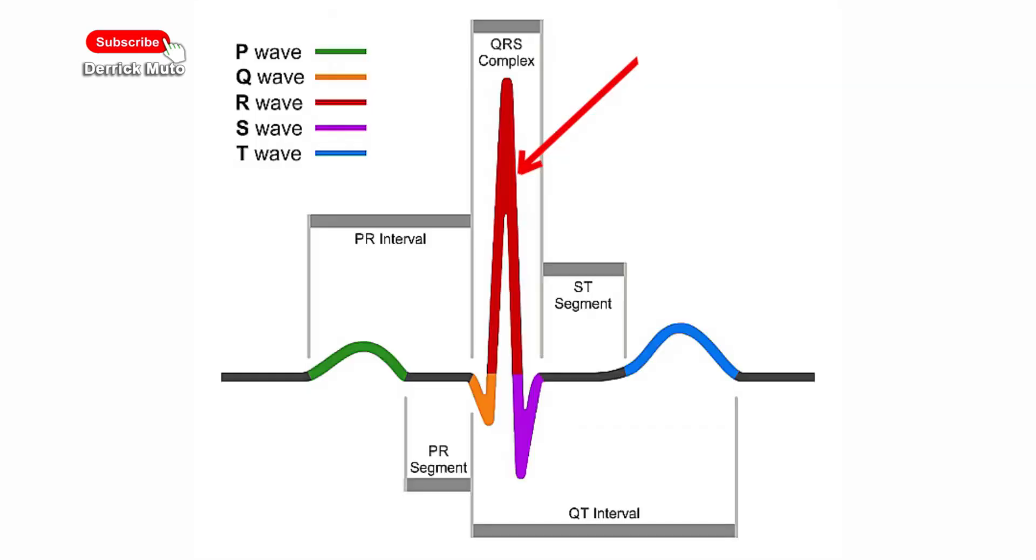The R wave is the first upward deflection after the P wave. It reflects the depolarization or contraction of the ventricles. The S wave signifies the final depolarization of the ventricles at the base of the heart.